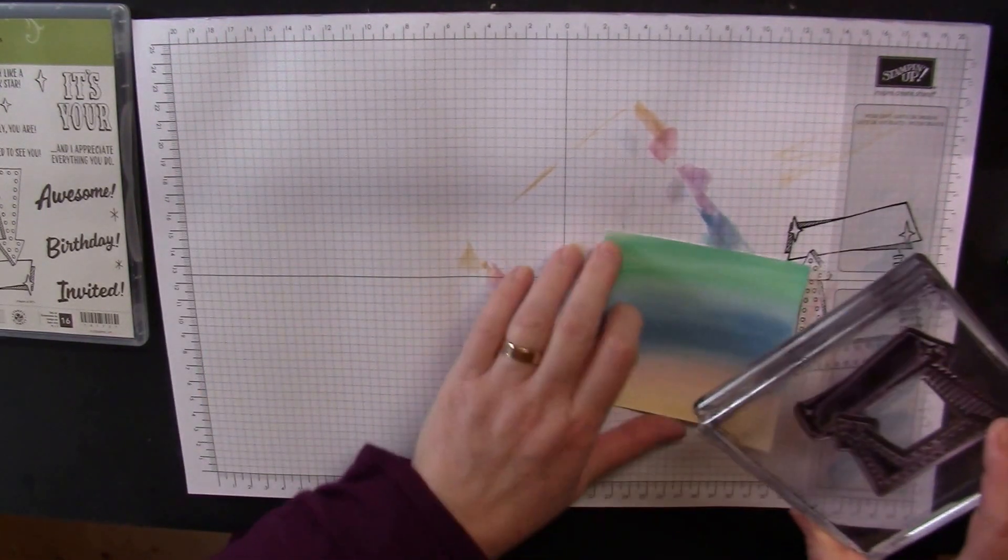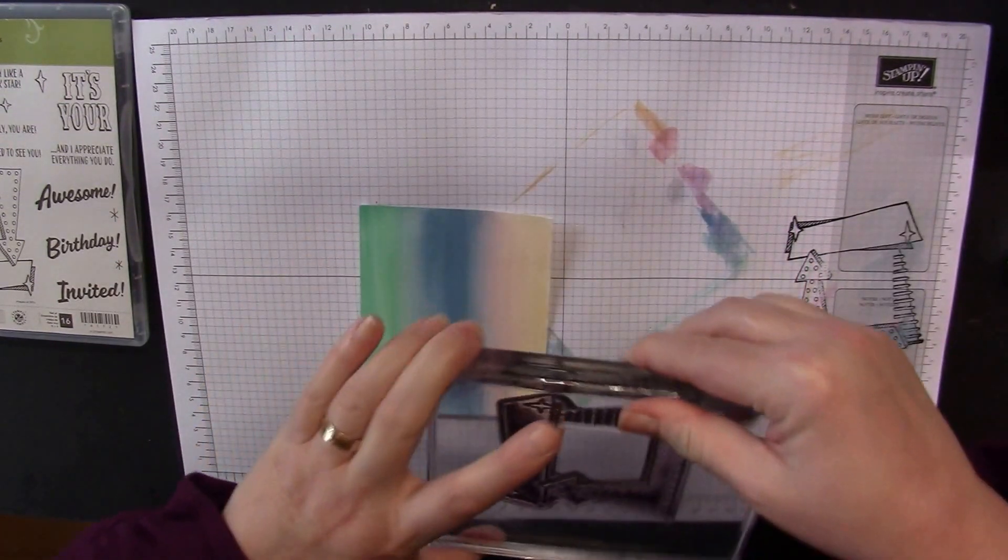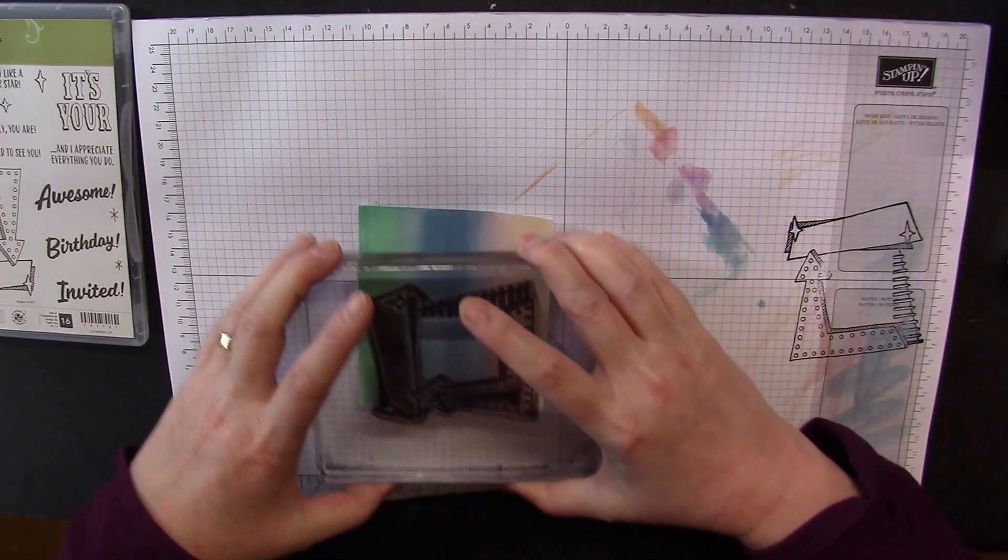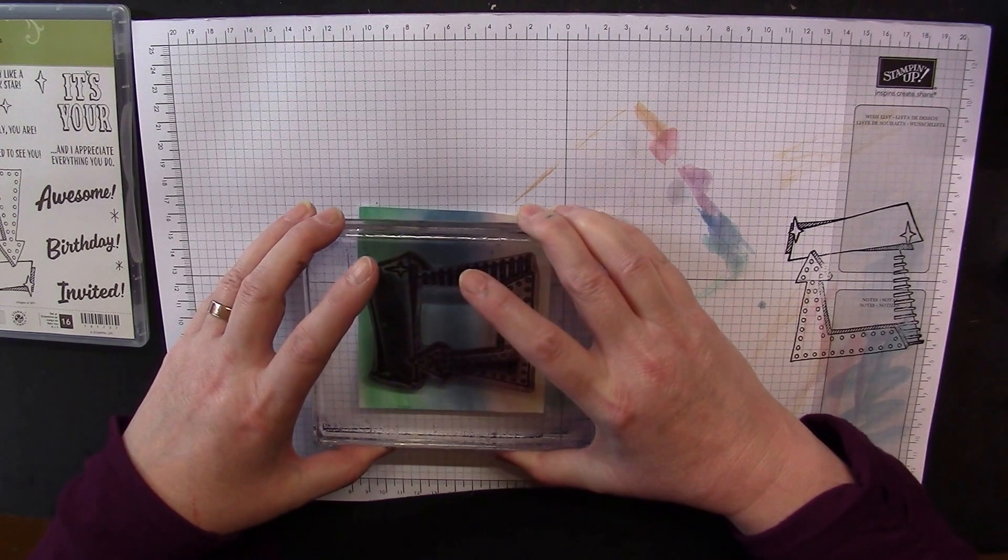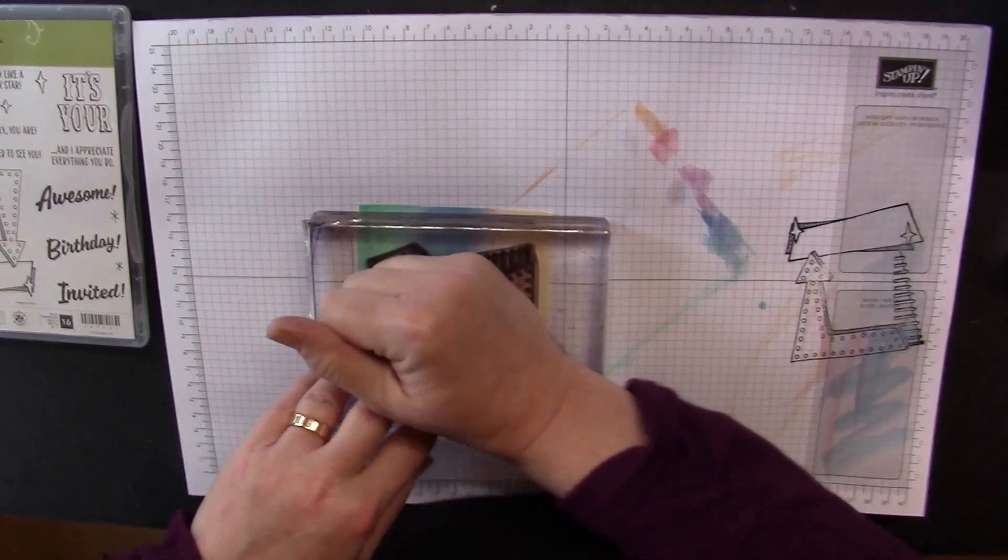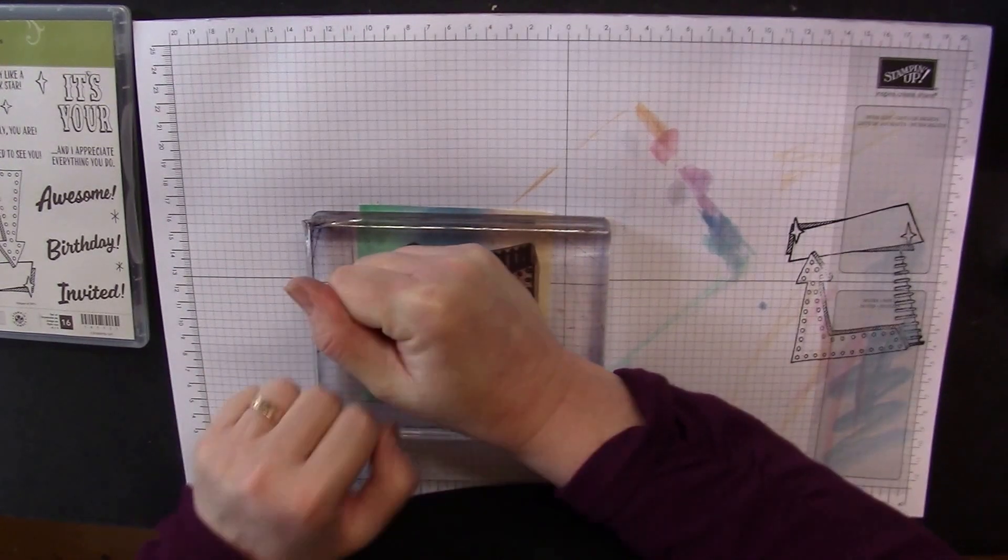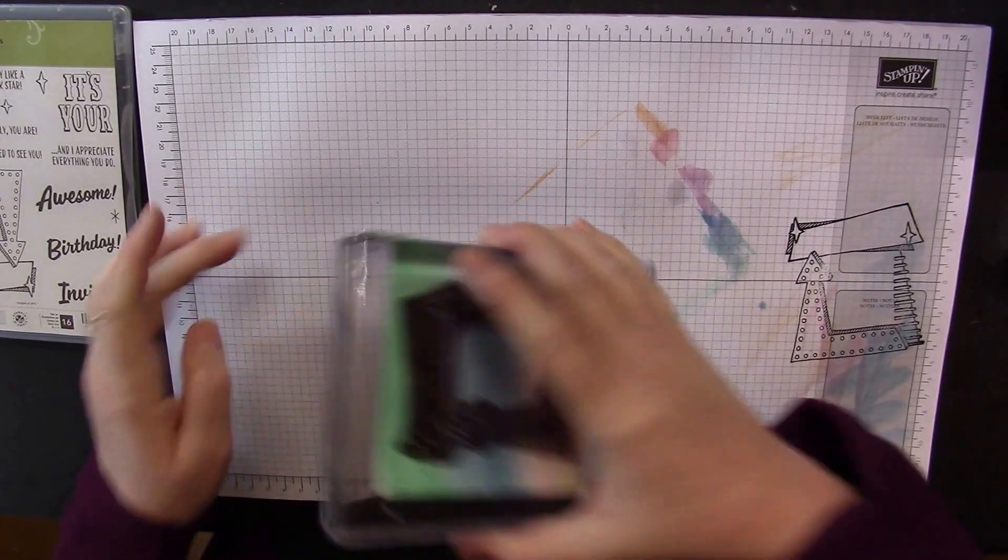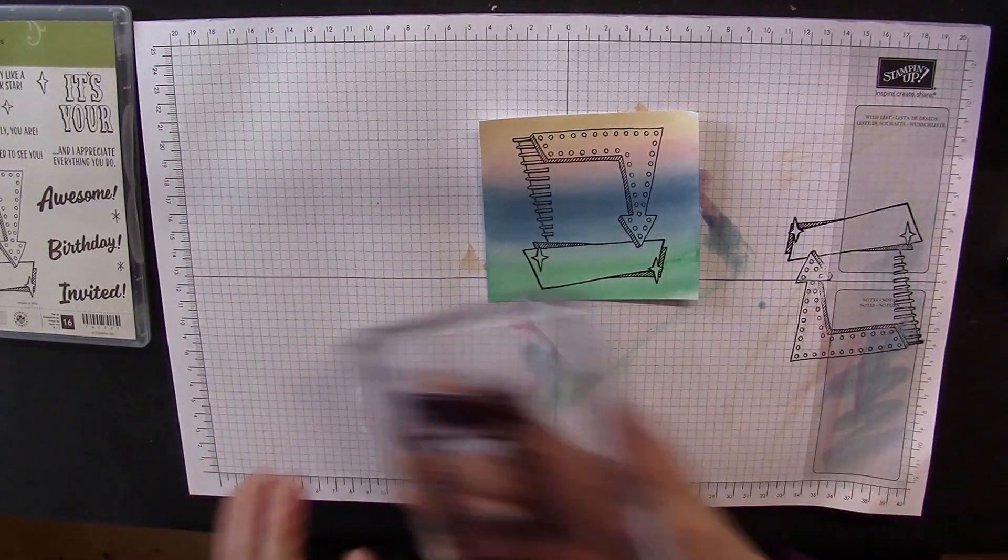You do need this to be completely dry when you stamp onto it, because it just impacts on the image and the overall effect if you don't. Let's get this fairly central. Down it goes. Give it a nice press. Not over the top, otherwise it distorts the image. But a nice press. And off it comes. And there's your stamp.